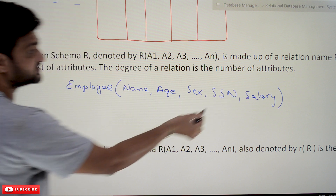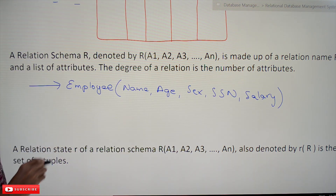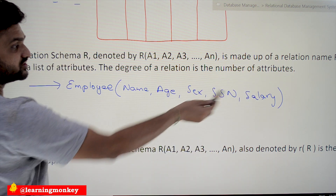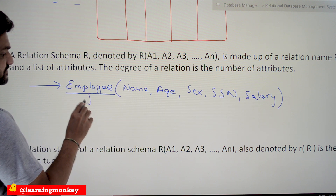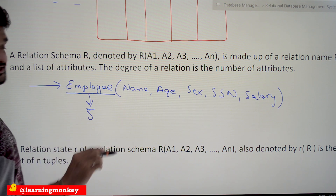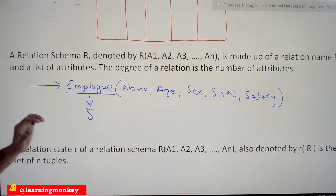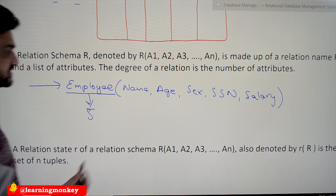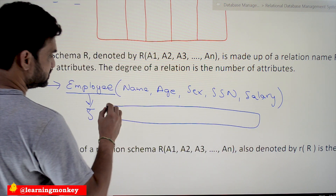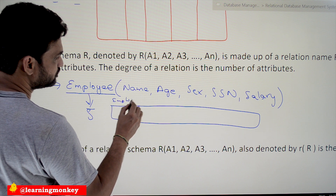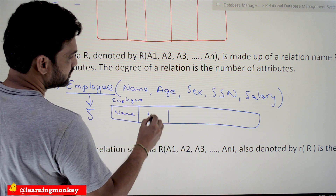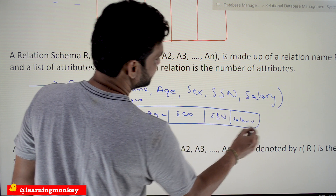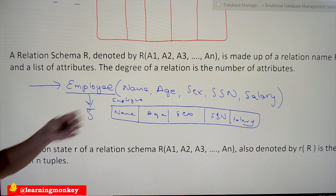This kind of representation is what we call a relation schema. The degree of a relation is the number of attributes. In our example, there are five attributes — one, two, three, four, five — so the degree of this relation is five. We can also represent the relation schema as: Employee(Name, Age, Sex, SSN, Salary). This is another valid way to represent a relation schema.